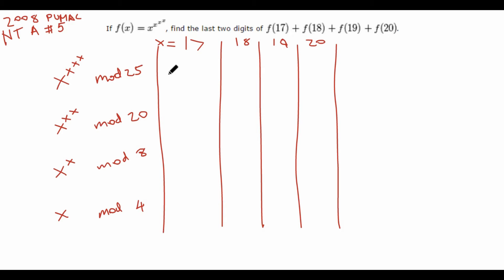Hi guys, it's Daniel here, and today we are going to do Part 2 of the Euler theorem videos. In this part, we're going to actually solve the problem that we saw on the last video. And this problem is the 2008 PUMAC Number Theory A, Problem number 5.